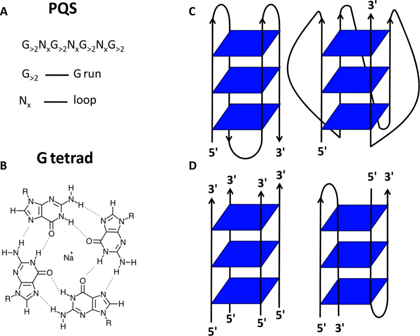In biochemistry, two biopolymers are antiparallel if they run parallel to each other but with opposite alignments. An example is the two complementary strands of a DNA double helix, which run in opposite directions alongside each other.